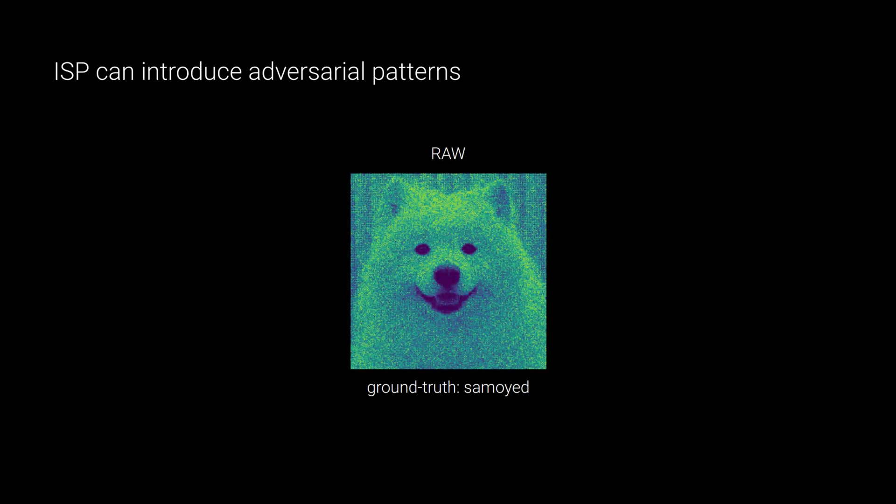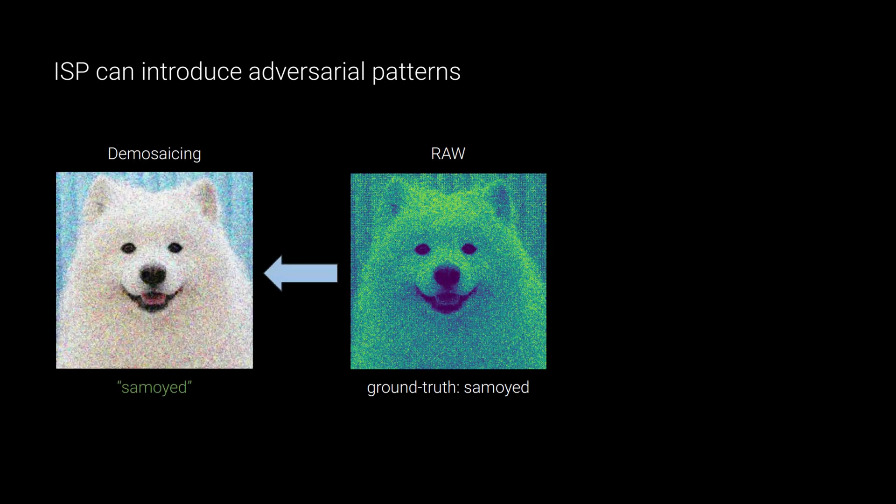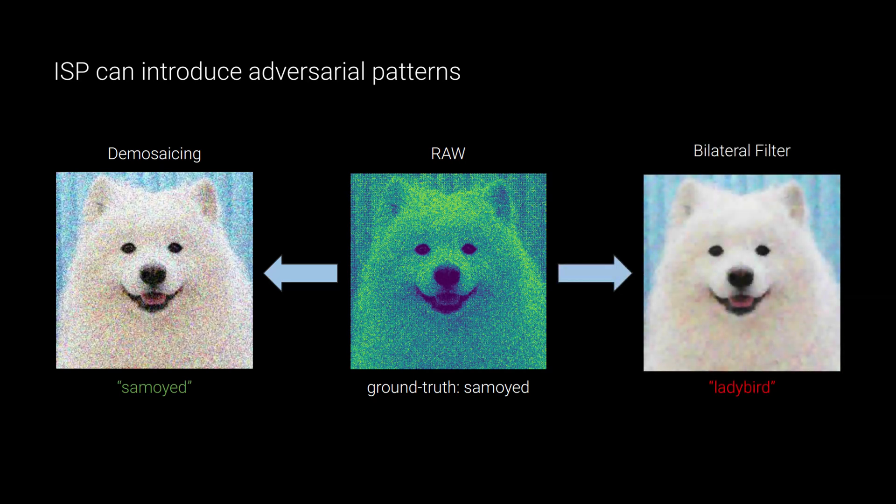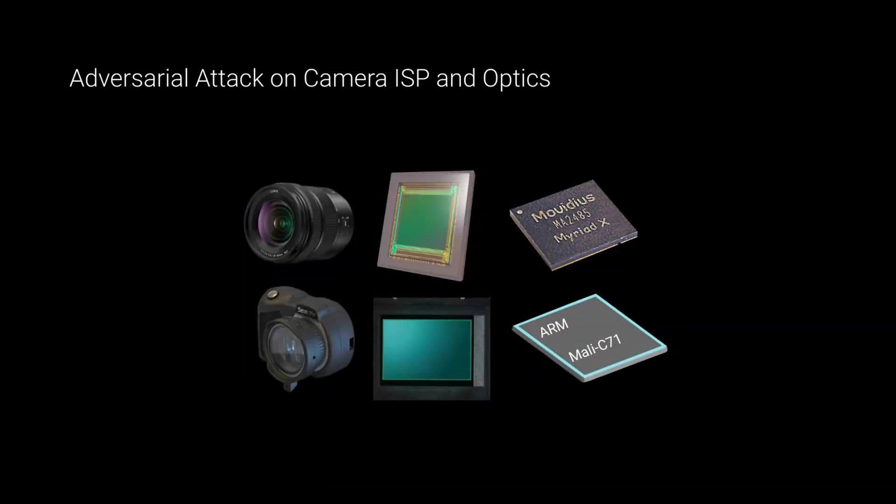Second, in some cases, image processing algorithms can accidentally introduce adversarial patterns. For example, a demosaicked version of this raw simoid image is correctly classified while the filtered one, which is more visually pleasing, is mistakenly classified as a ladybird.